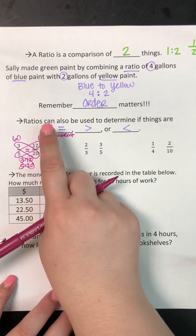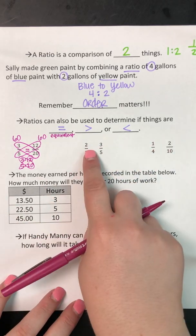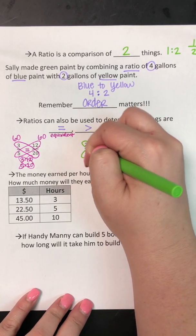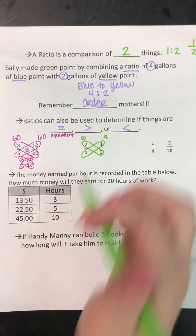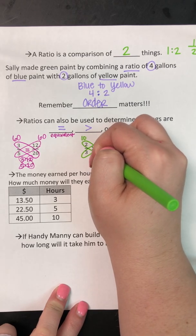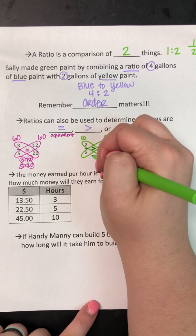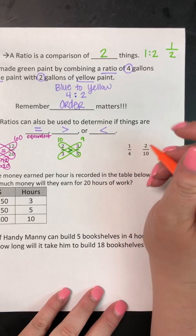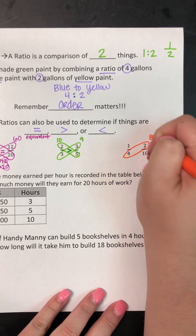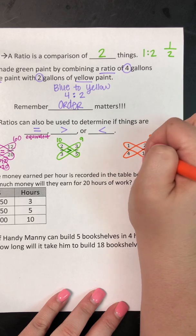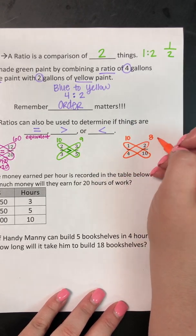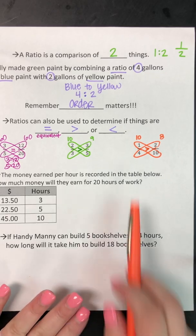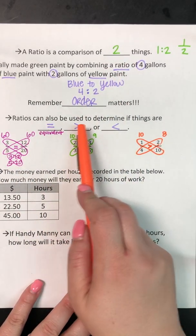It doesn't matter if they're written as fractions or ratios — this method still works. For the next example, we multiply corner to corner: three times three is nine, and five times two is 10. These are not equivalent. 10 is greater than nine, so that fraction is greater. Your Pac-Man is going to eat the larger fraction. For the last one, four times two is eight, and one times 10 is 10. 10 is greater than eight, so one-fourth is greater than two-tenths. That's how we use the butterfly to see if ratios or fractions are equal, greater than, or less than.